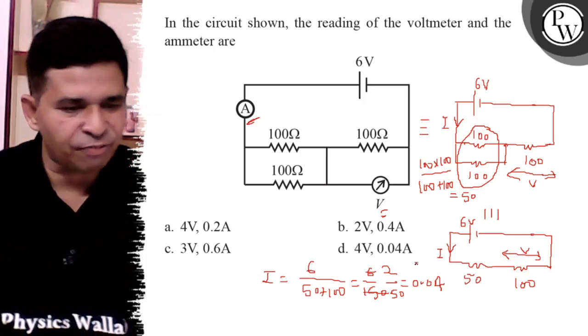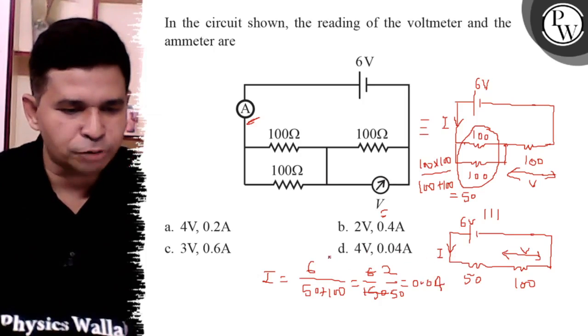So 0.04 is the answer. Find 0.04, there is only one option, that is D.